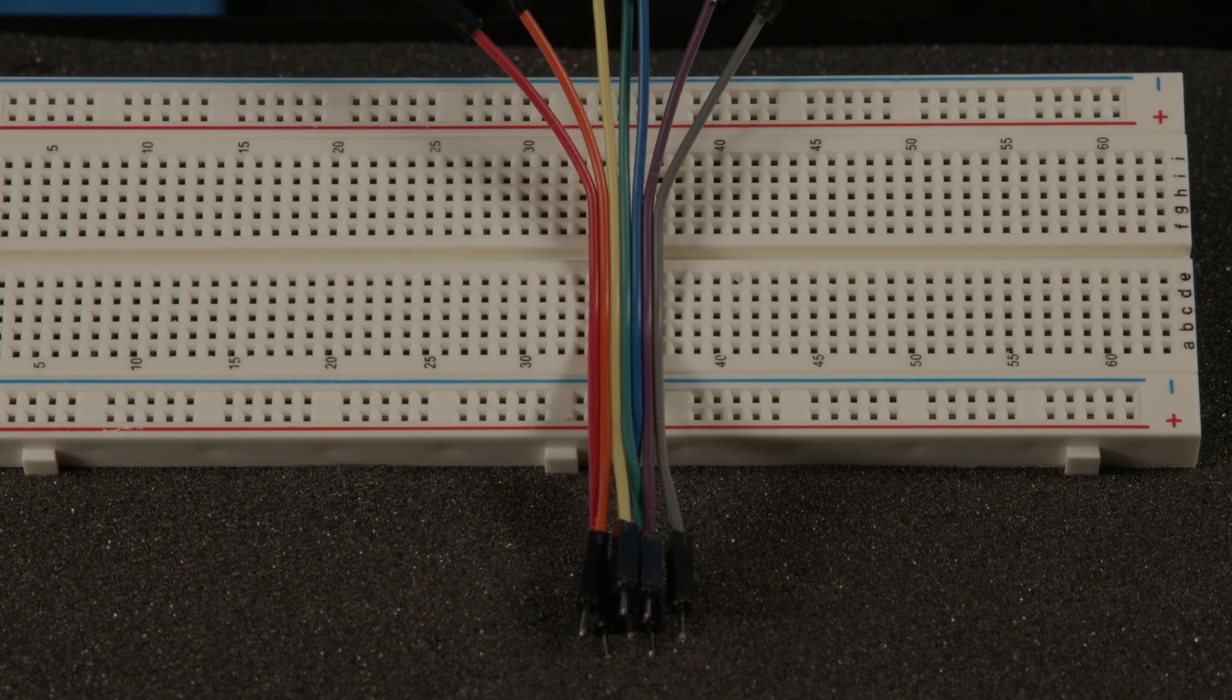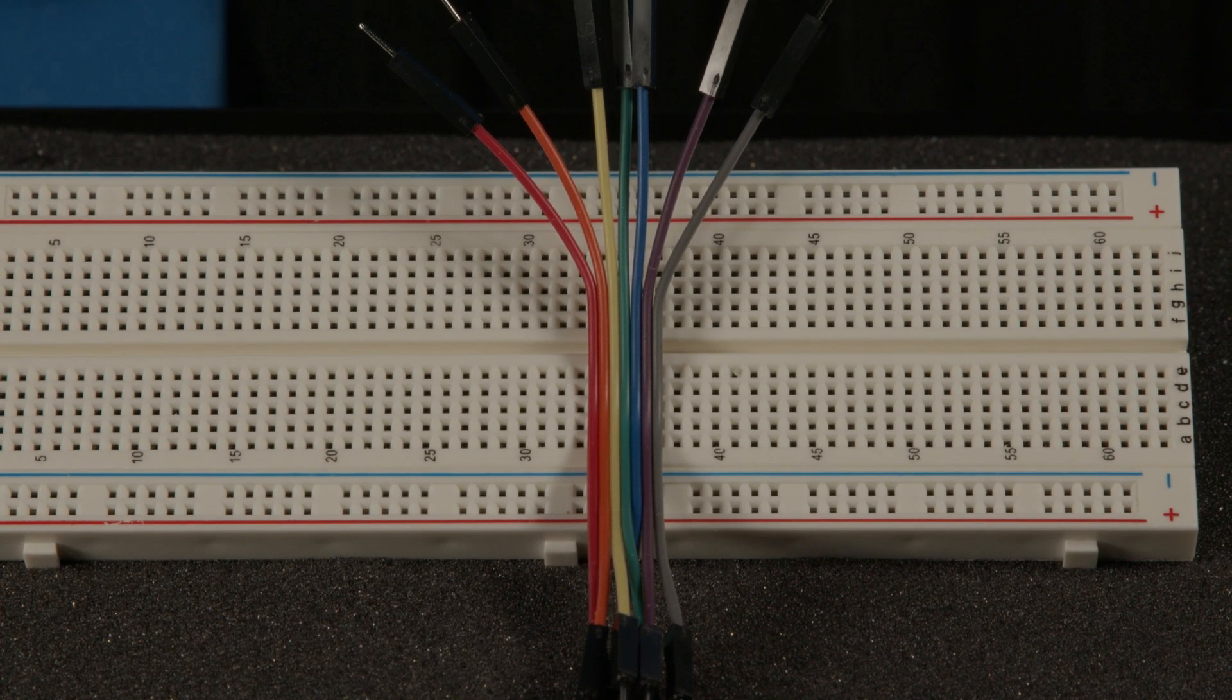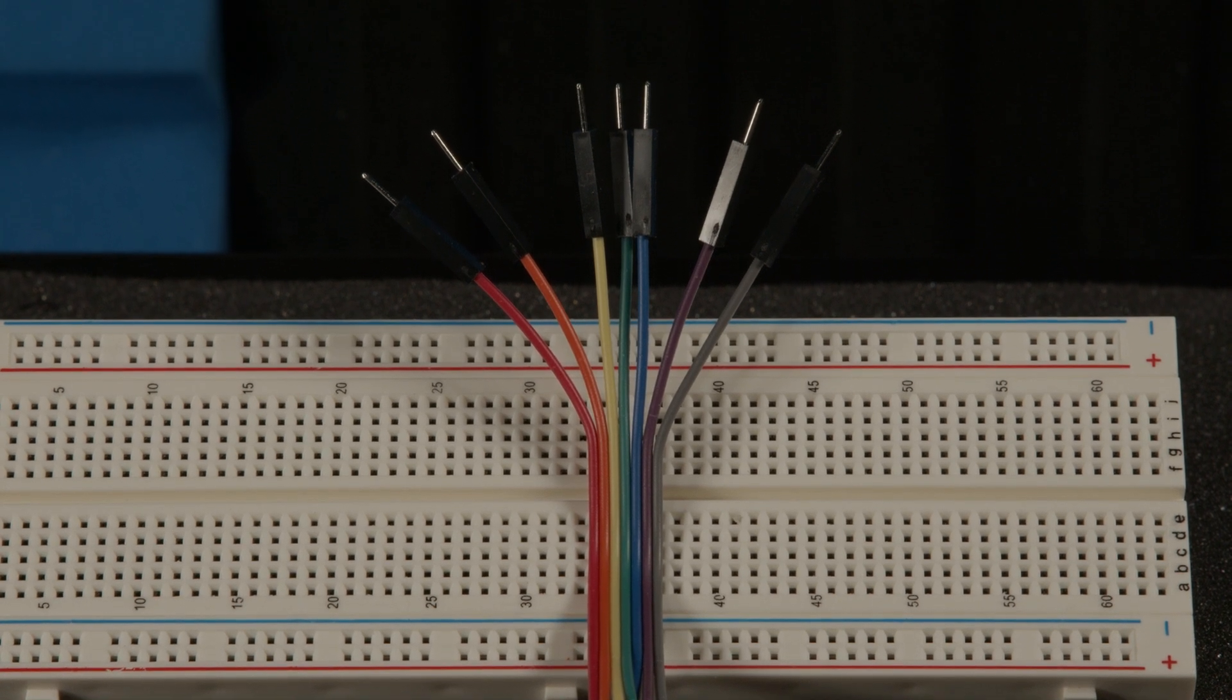We also need a way to connect the components to one another. To do this, we can use breadboard jumper wires, which come in multiple colors to make it easier to see what is connected to what.